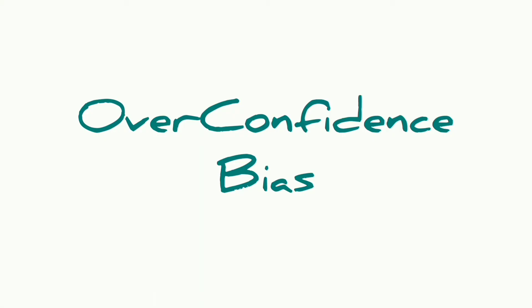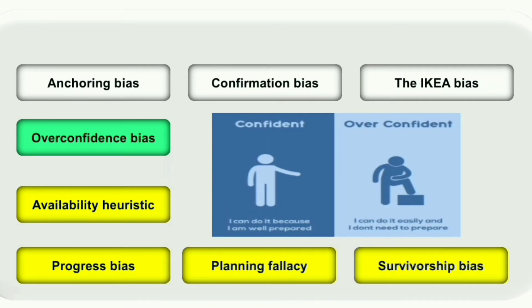The next one is overconfidence bias, associated with many business people. This is the belief that we can do things much faster than we actually can — we overestimate how quickly we can complete work and underestimate how long it really takes. In offices, managers may put extra pressure to meet deadlines without analyzing how long a task will take. The solution is to step back, analyze the situation, and base your time estimates on facts rather than hunches.